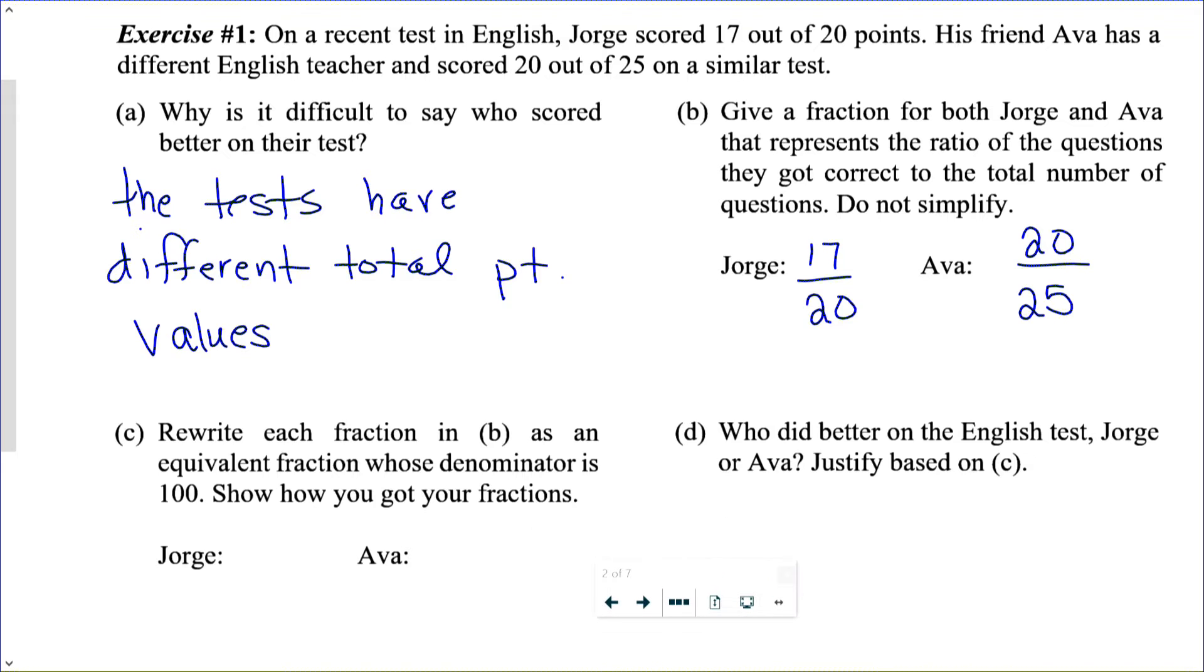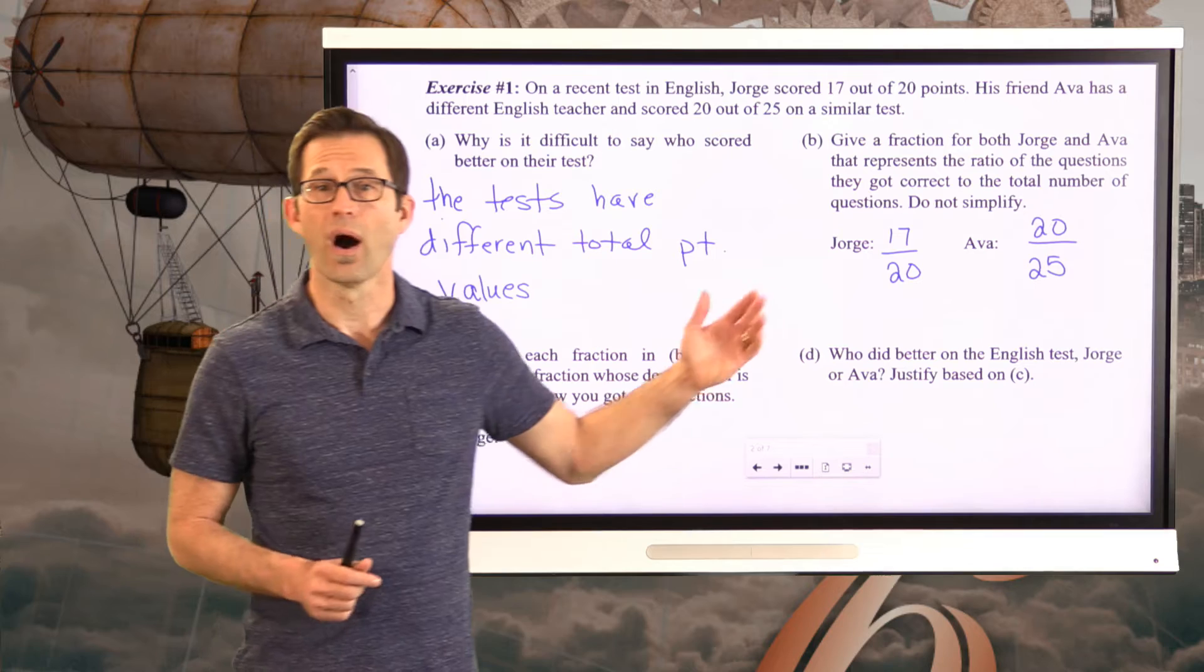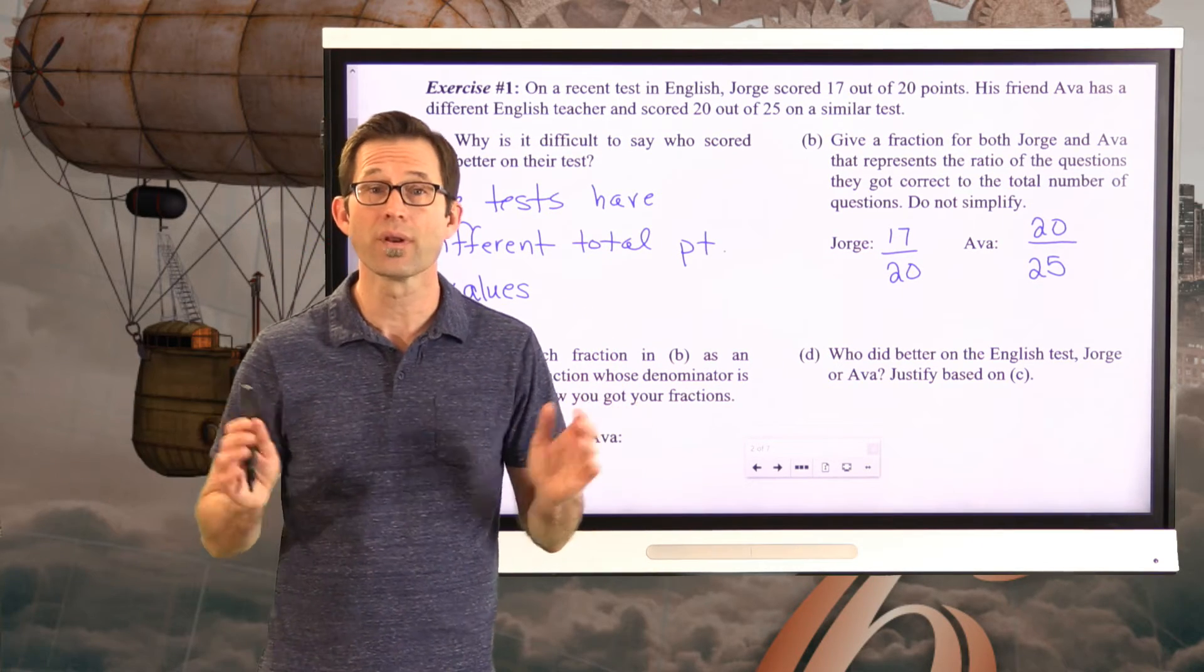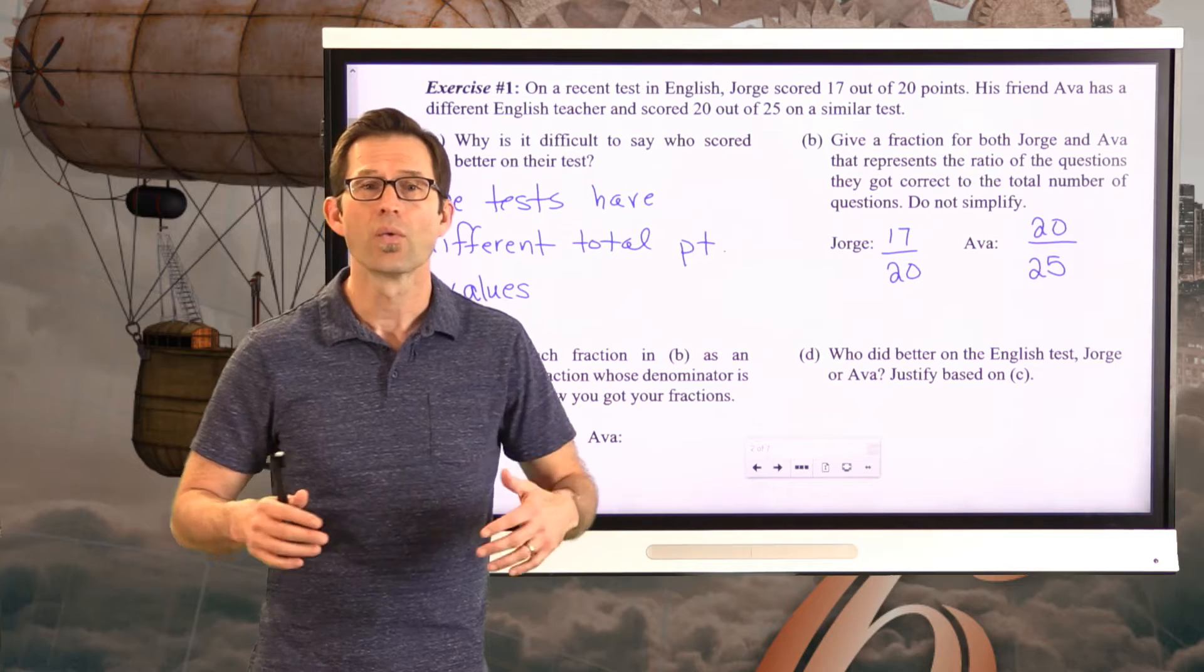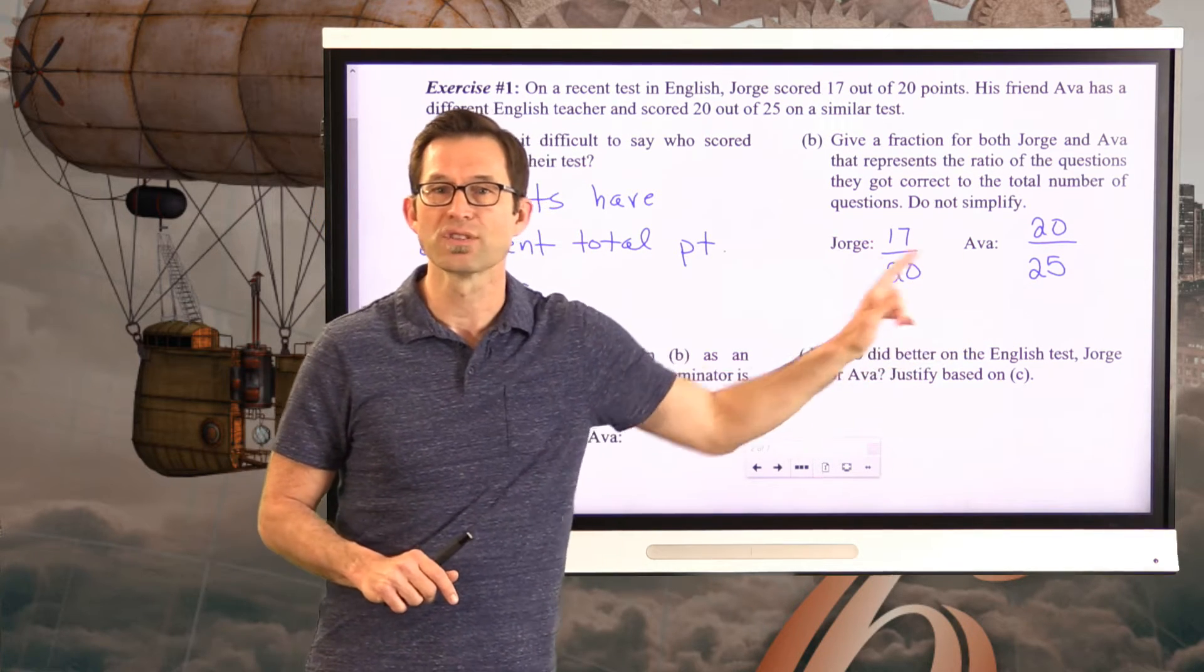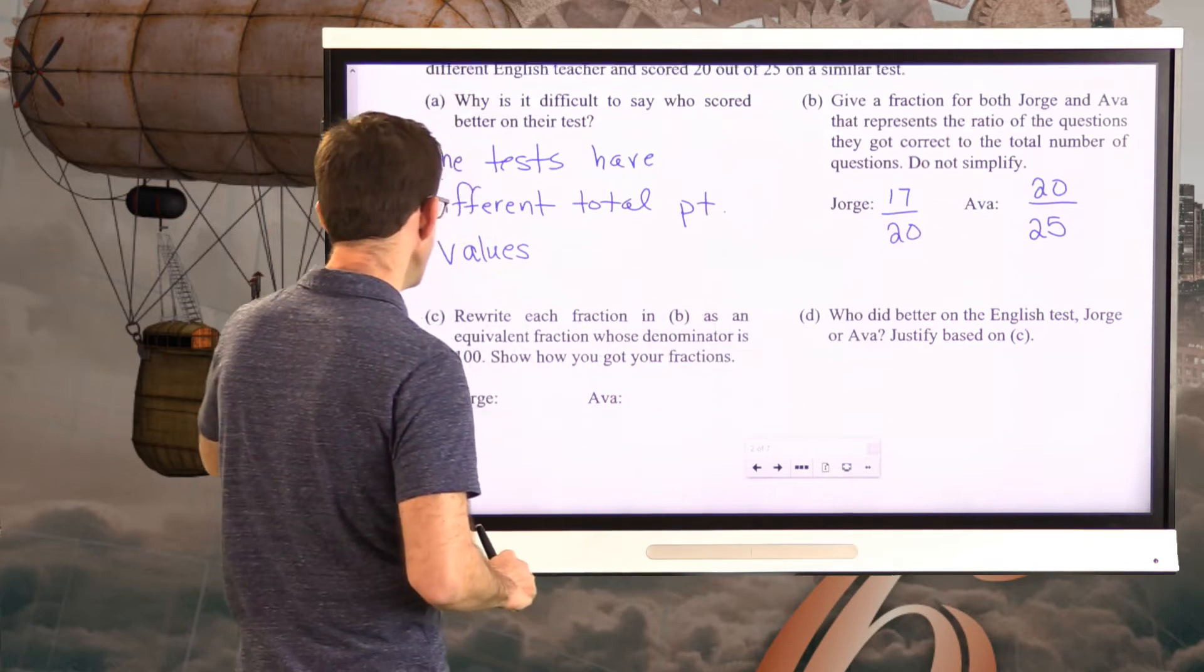Now, before we go on to letter C, imagine going back to those points when you had to think about whether one fraction or another fraction was the larger fraction. There's various ways to do that. But one really good way of comparing whether one fraction is larger than the other fraction is to ensure that they both have the same denominator. Because the denominator is kind of like the total number of points. So let's take a look at that in letter C.